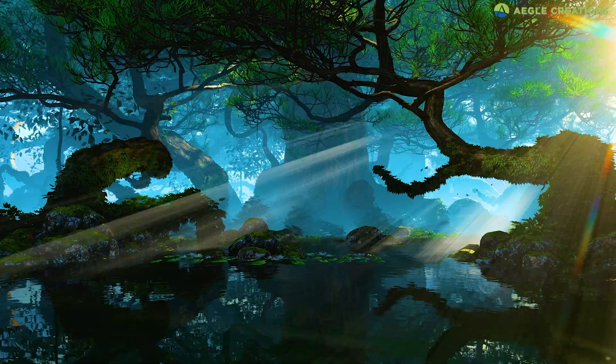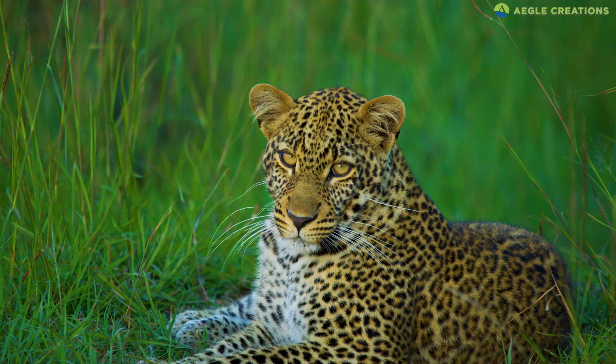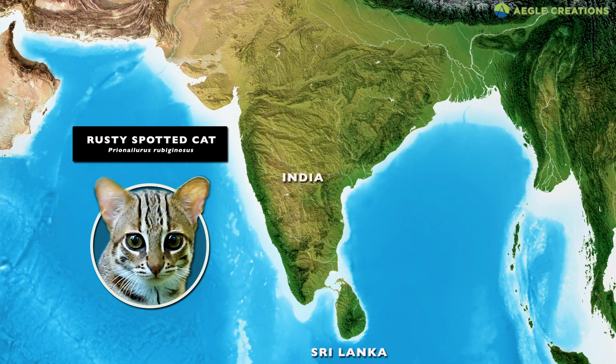They lived in dense forests, stalking prey from the trees. Later on, miacids evolved into other predators. Twelve million years later, feline evolution formed the ultimate predator.